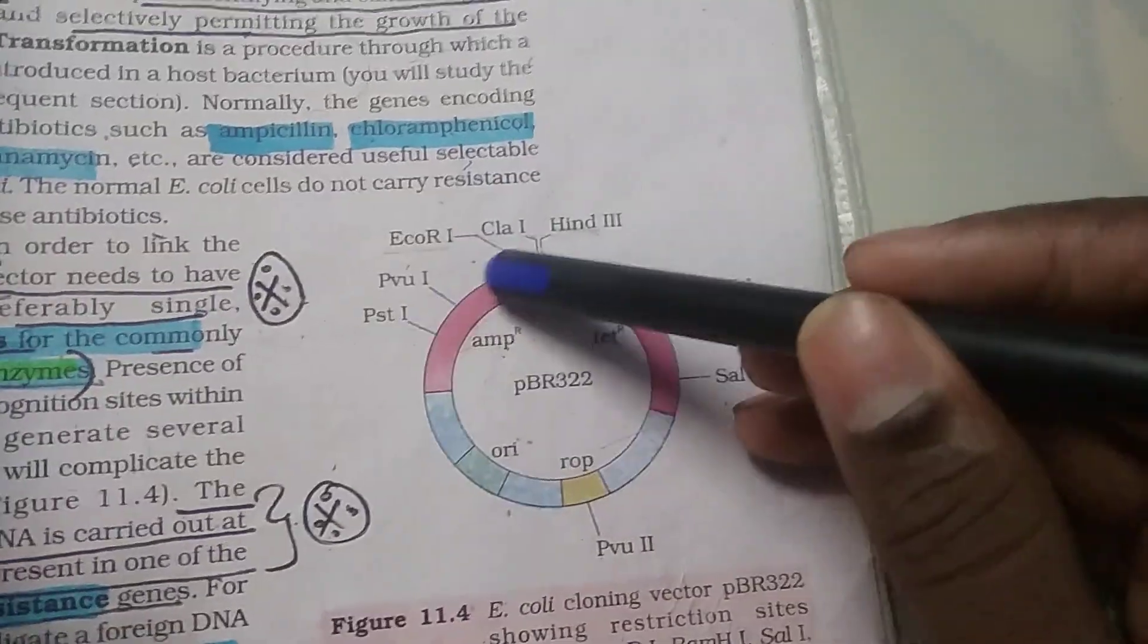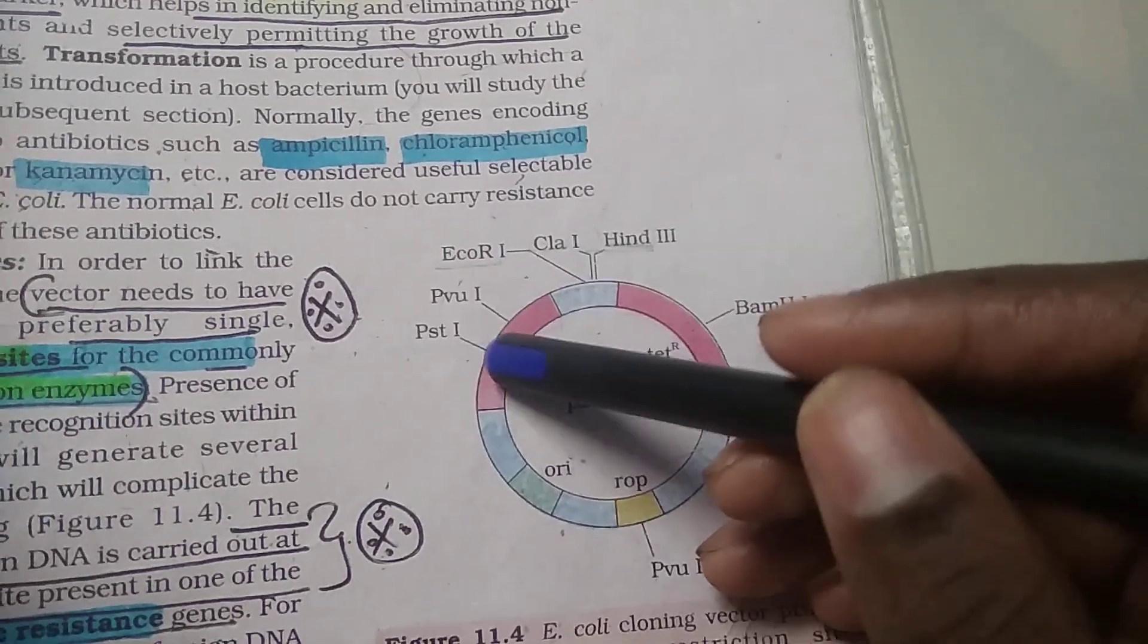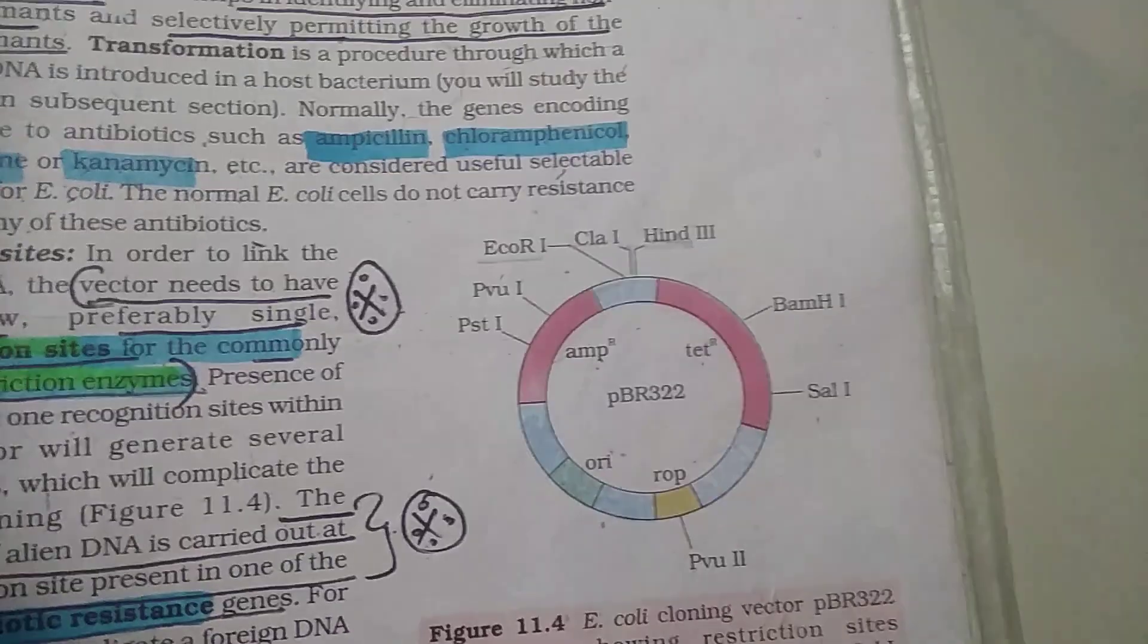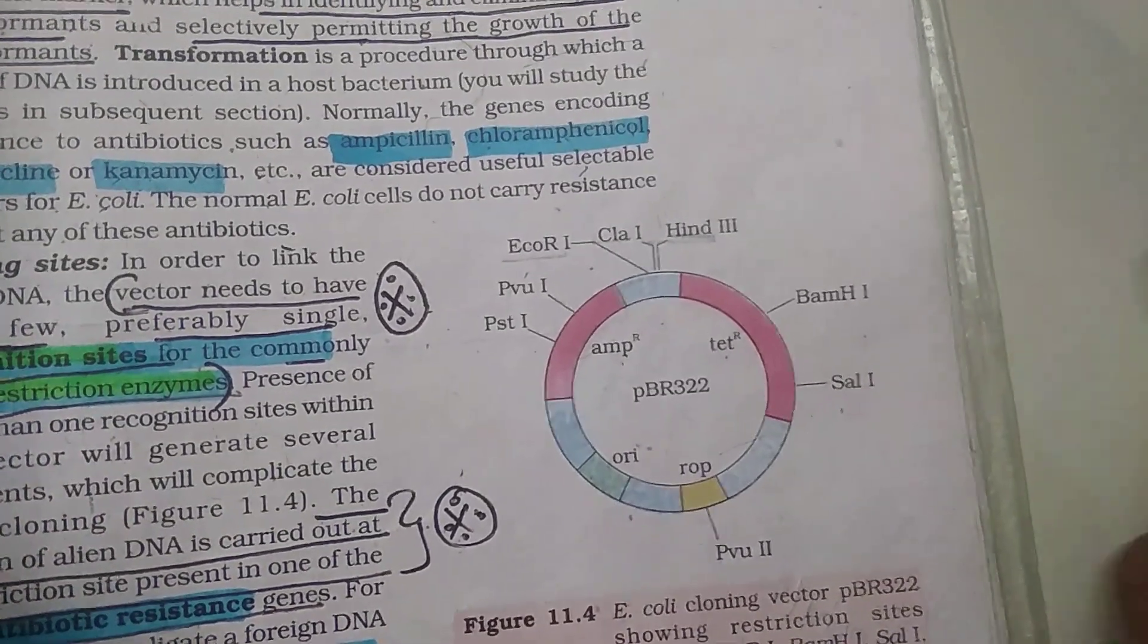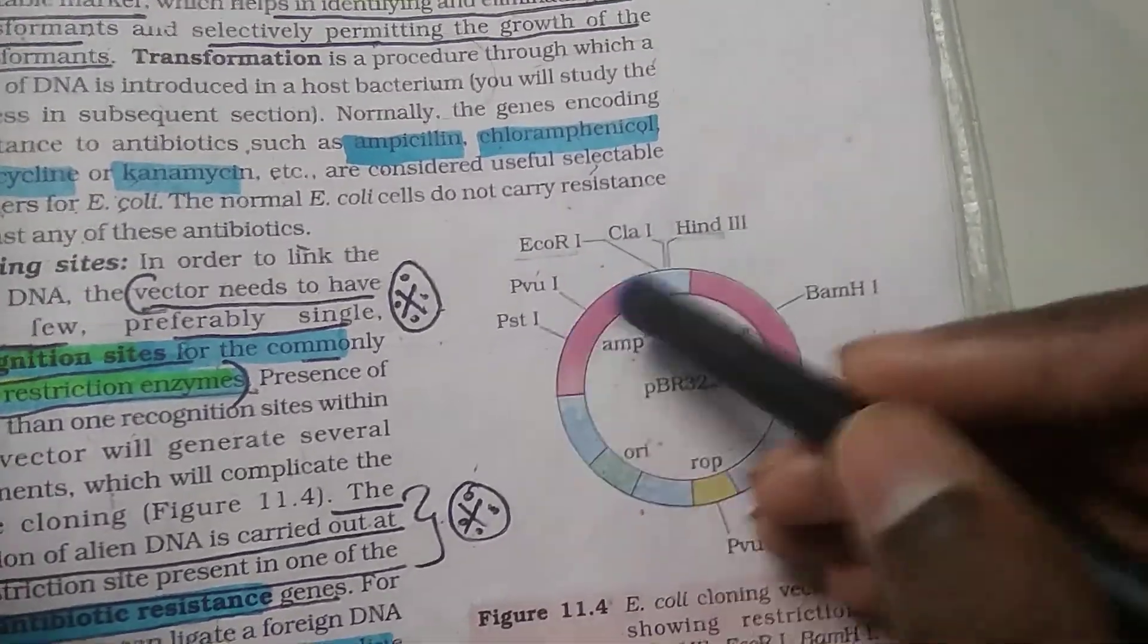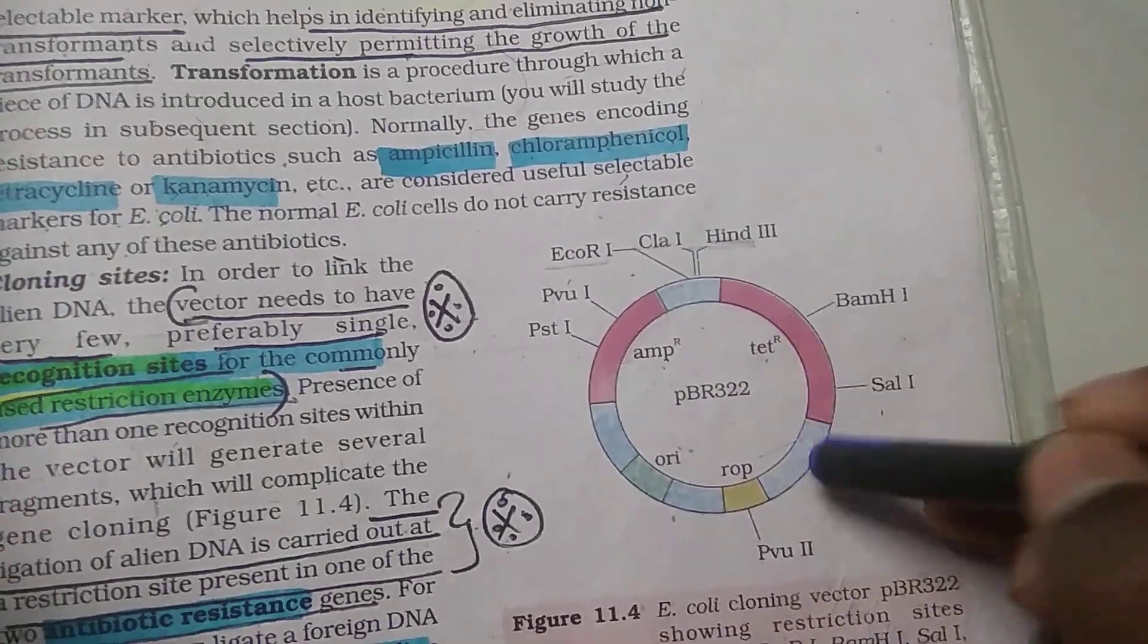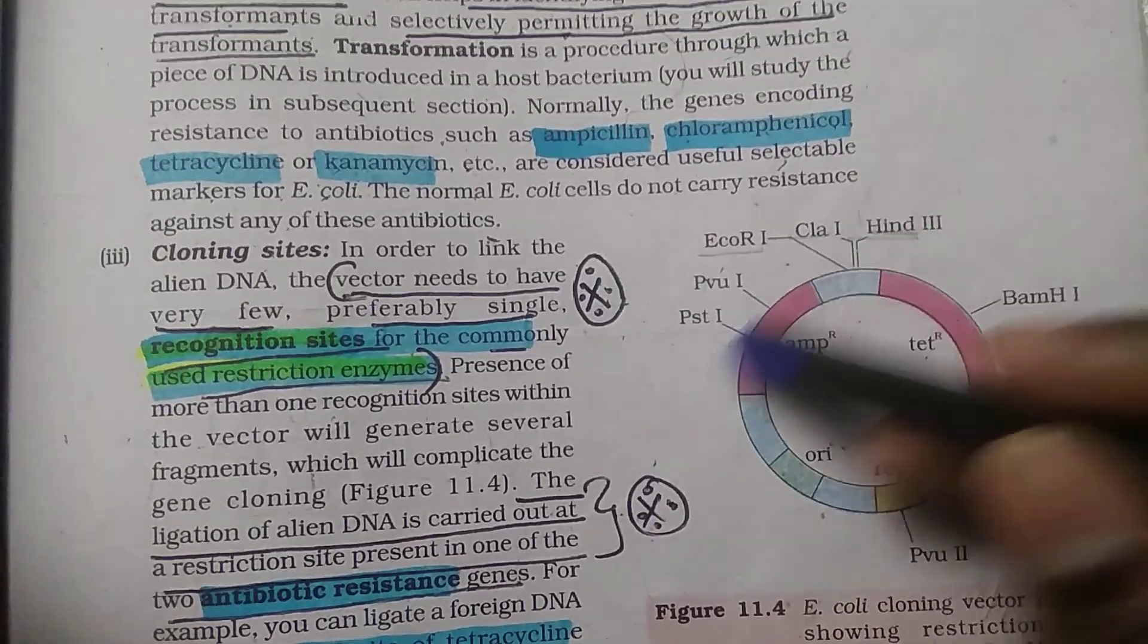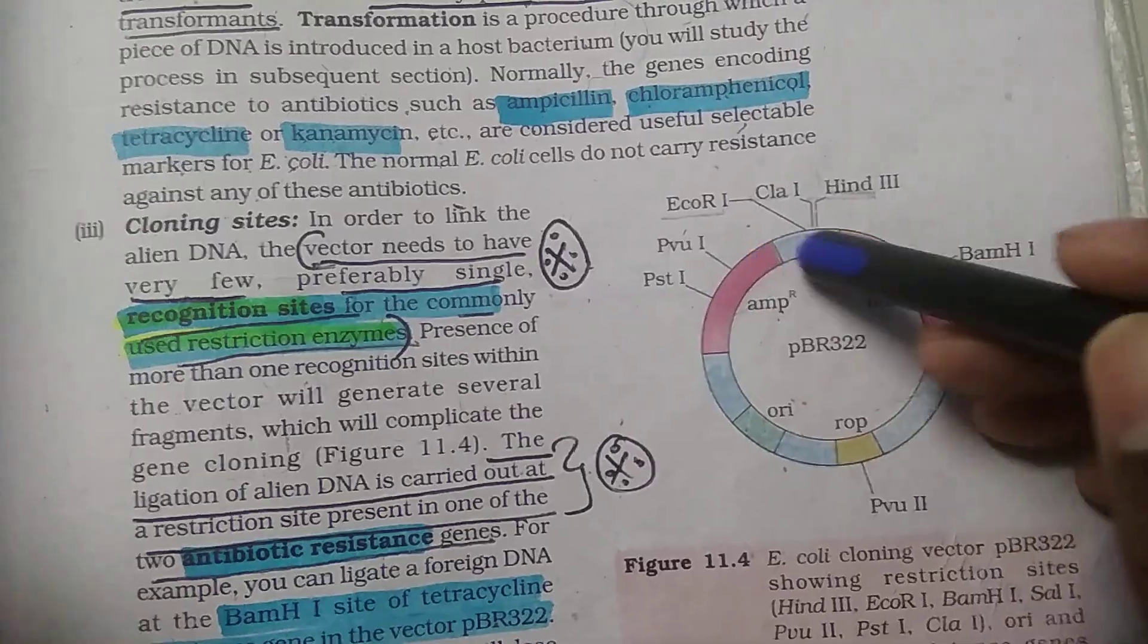This is the plasmid pBR322 vector. This is the cloning vector pBR322. We have a sequence of different restriction sequences.